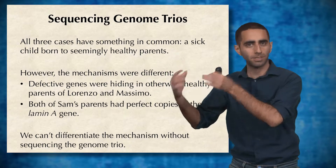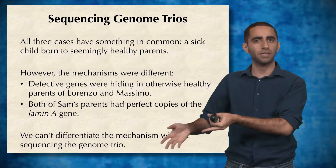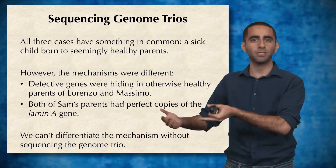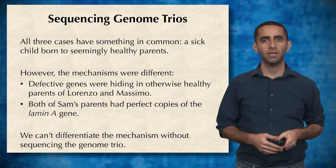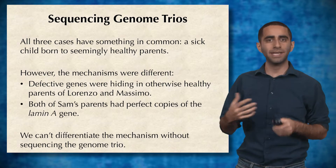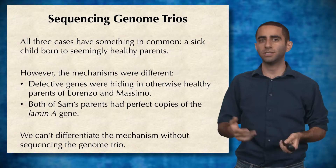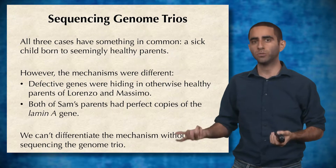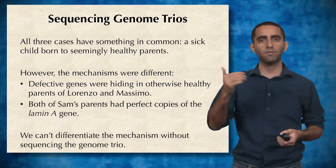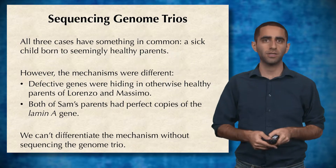versus both parents having actually two perfect copies, but still having a child that somehow gets a mutation. And we actually cannot differentiate between these two mechanisms without sequencing the genome trio — the mother, father, and child.